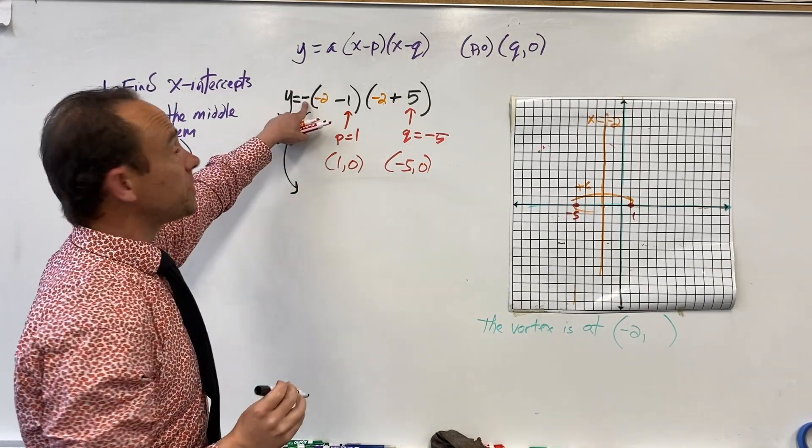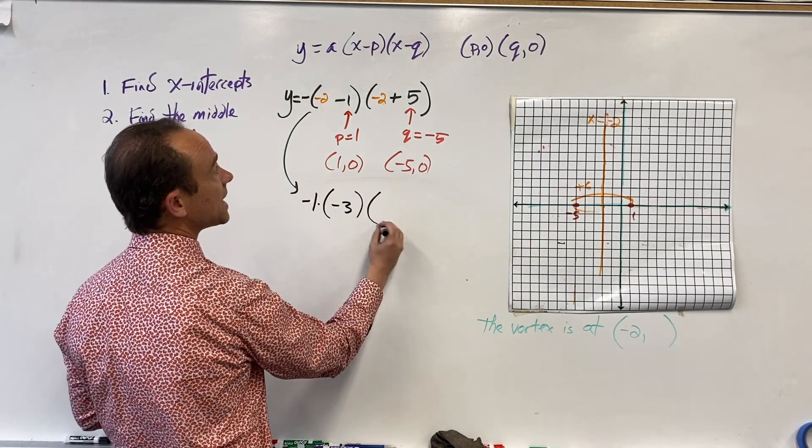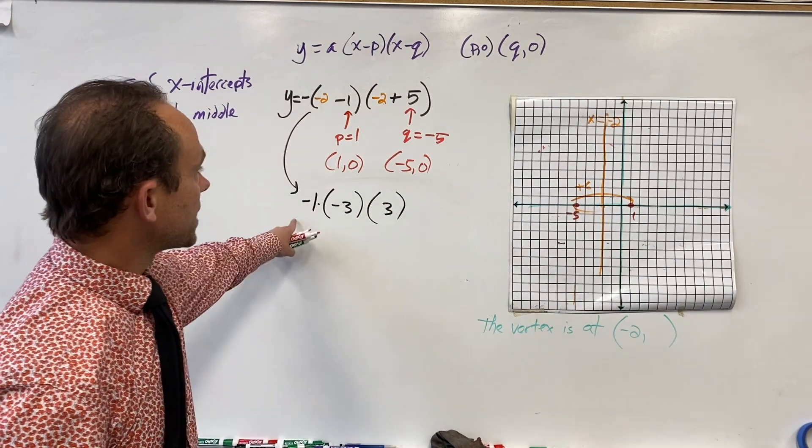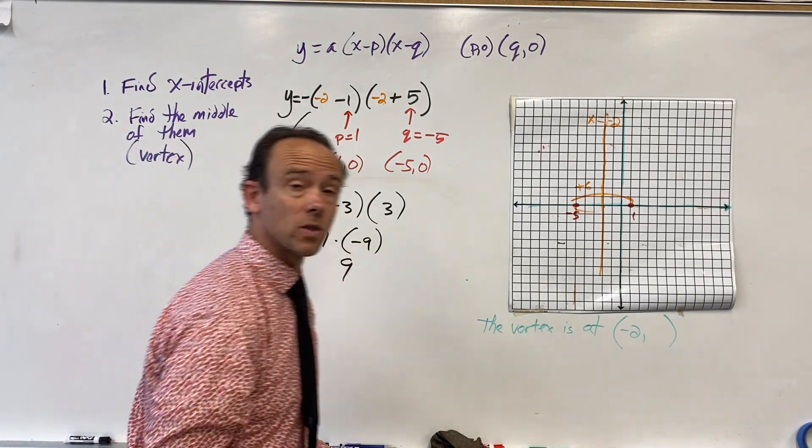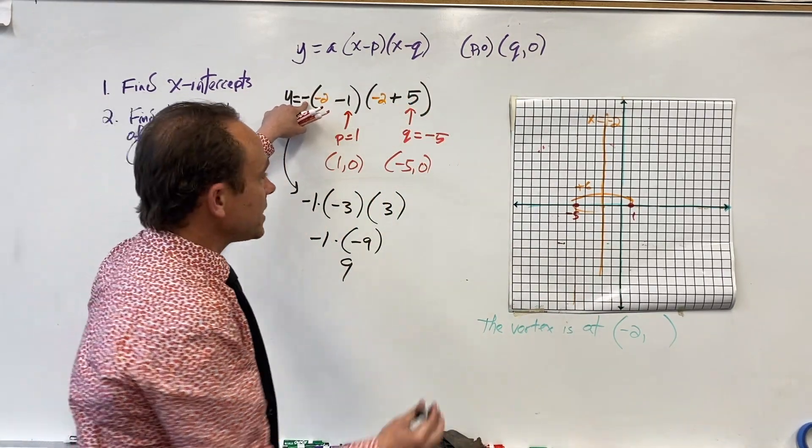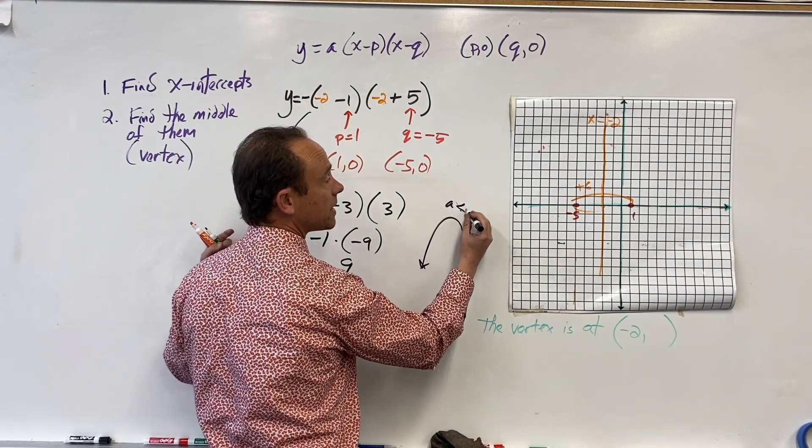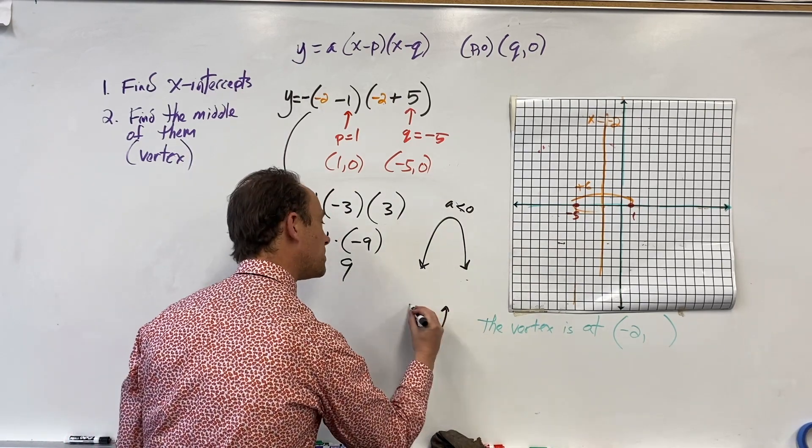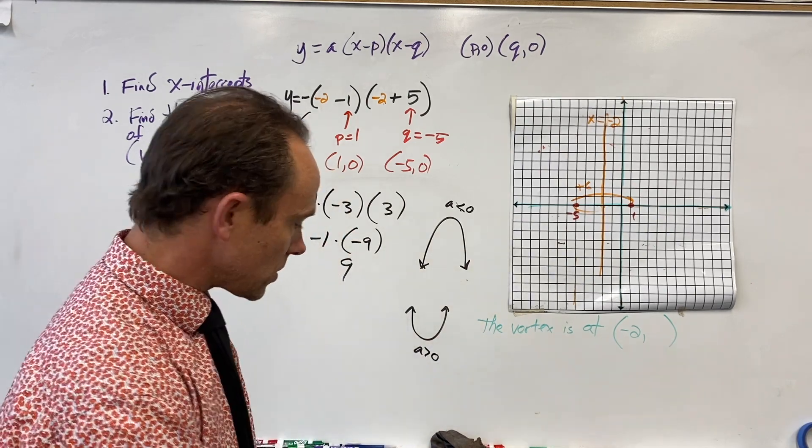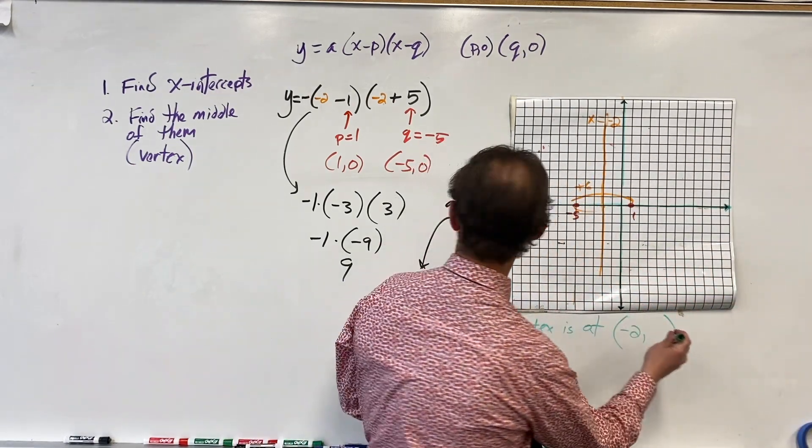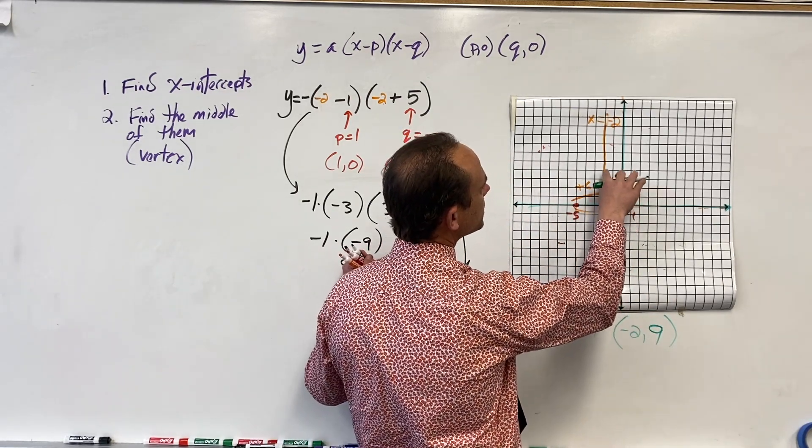That negative here, I'm going to write it as a full-on negative 1. We got -1 times -1 times -9 gives you positive 9. We could anticipate that because with the a value being negative we know parabolas point down when a is less than zero, and it points up when a is greater than zero.